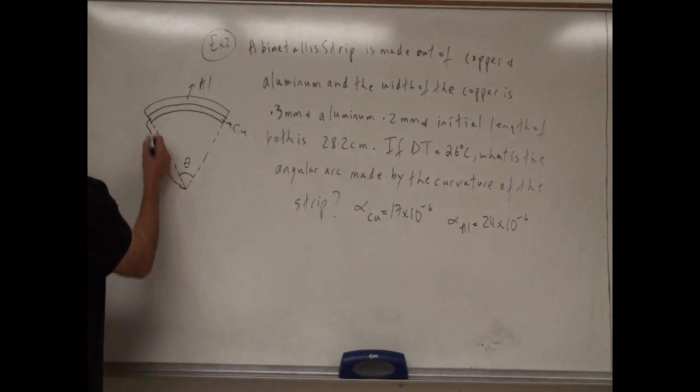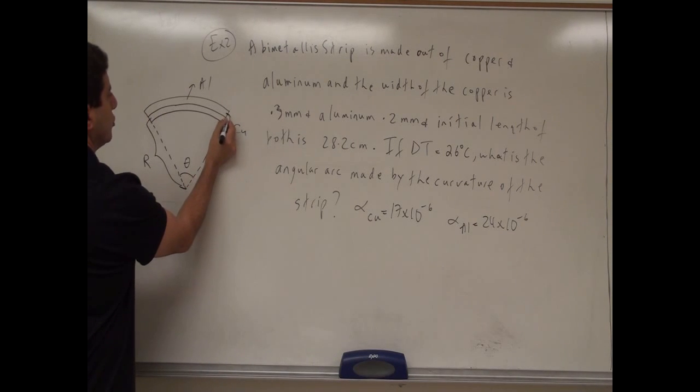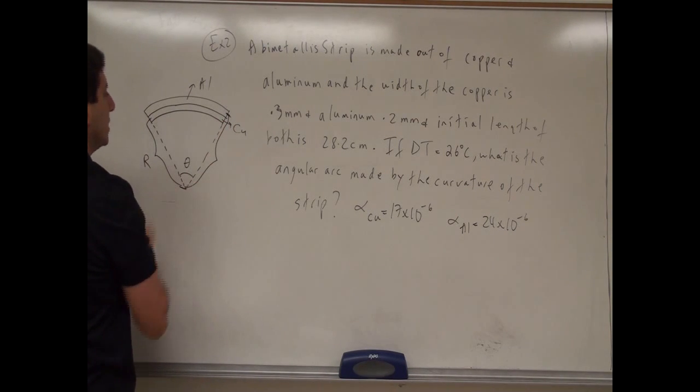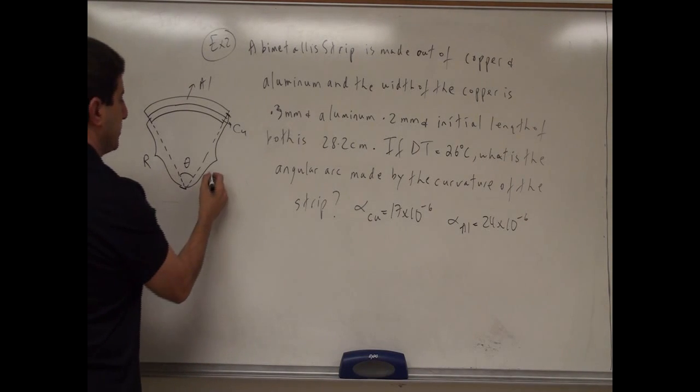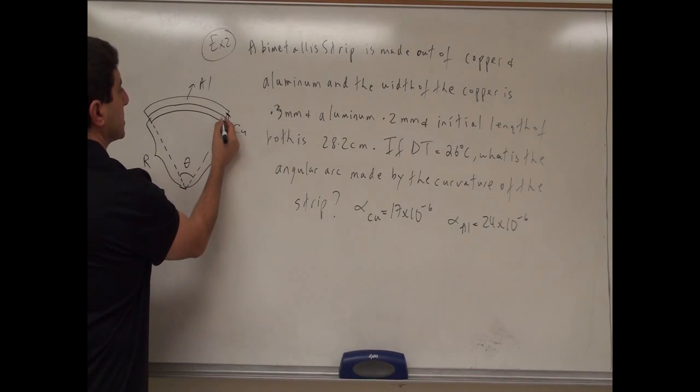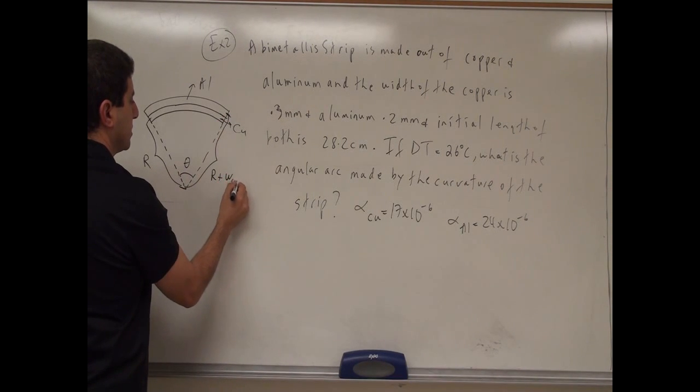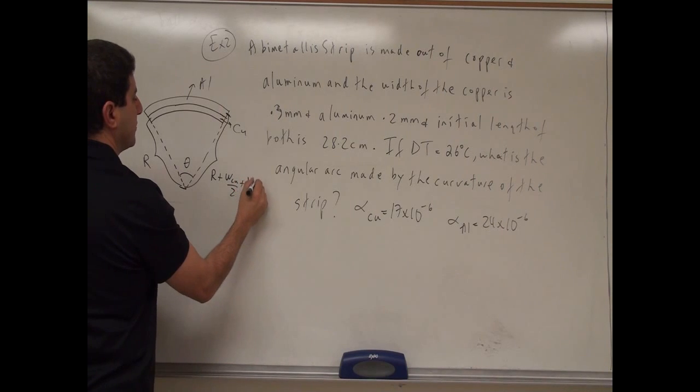So the distance from here to here is r, and then the distance from the center of the aluminum strip to the center of the arc is going to be what? So r plus, it's going to be the distance from here to here, half the width of the copper, plus the half the width of the copper, plus half the width of the aluminum.